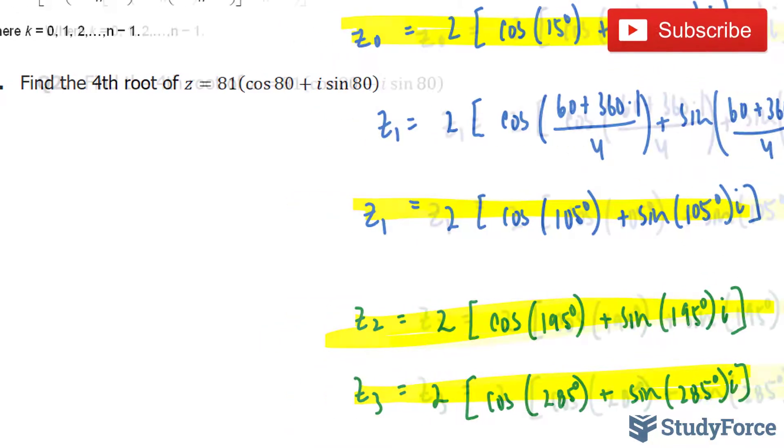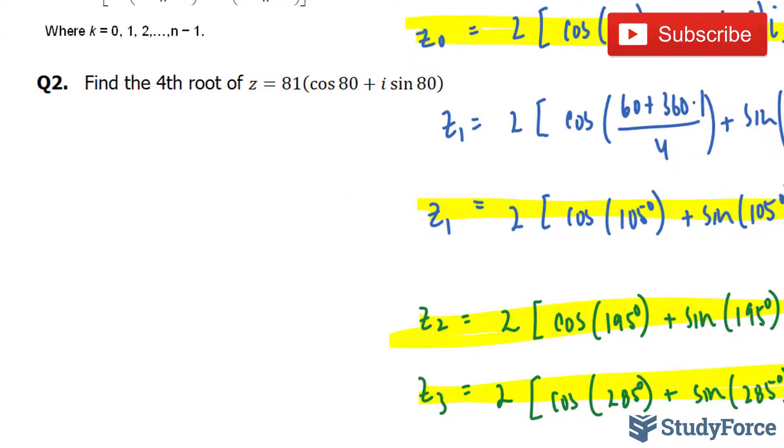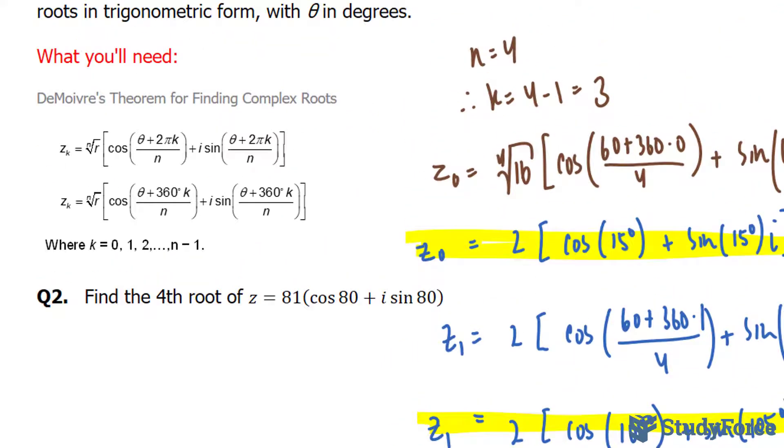Let's move on to question number two. This time they want us to find the fourth root of z equals 81(cos 80° + i sin 80°). We're going to follow the same technique, and our angles are in degrees, so we'll be using this formula. Your n value equals 4, and k, once again, equals 3.